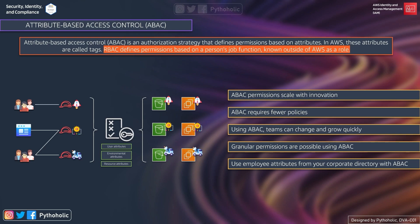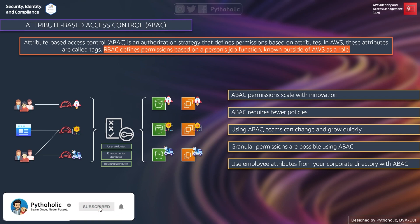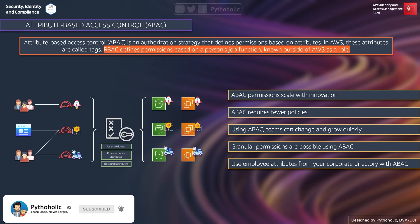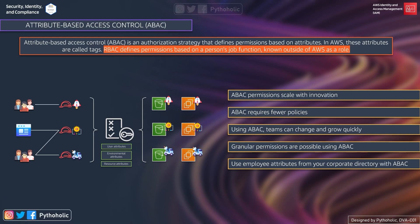Last but not least, you can use employee attributes from your corporate directory with ABAC. When we use session tags with SAML, we can pass those session tags to AWS. Using these attributes — like project, team, business unit, or cost center — we can provide access using attribute-based access control. If your user has a session tag based on user attributes, those tags are passed to AWS and access is granted accordingly.